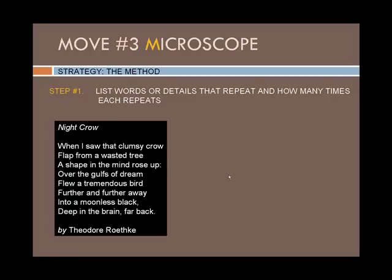Since this is a short poem, we don't have a lot of raw material to work with, but even so there are several repetitions. The word 'crow' and the word 'further' are both repeated twice. If you were looking at a painting or a film, you might look for colors, scenes, objects, or dialogue that's repeated. Isolating repetitions in this way helps you begin to see what the subject is interested in talking about or showing.